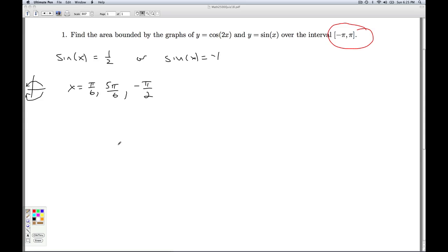I can put those on the number line, and that'll tell me which curve is on the top and which curve is on the bottom. So here's negative pi and pi. I'm going to put these on here in increasing order, so minus pi over 2, pi over 6, 5 pi over 6, and I'm just going to check these intervals in between.